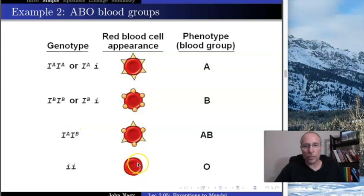The only way you can be O is if you have the two broken versions, little i, little i. So we see here that this is Mendelian, except there's a third allele instead of just two alleles, and that could explain all the variation that we see, but there's one other nuance that's very important.